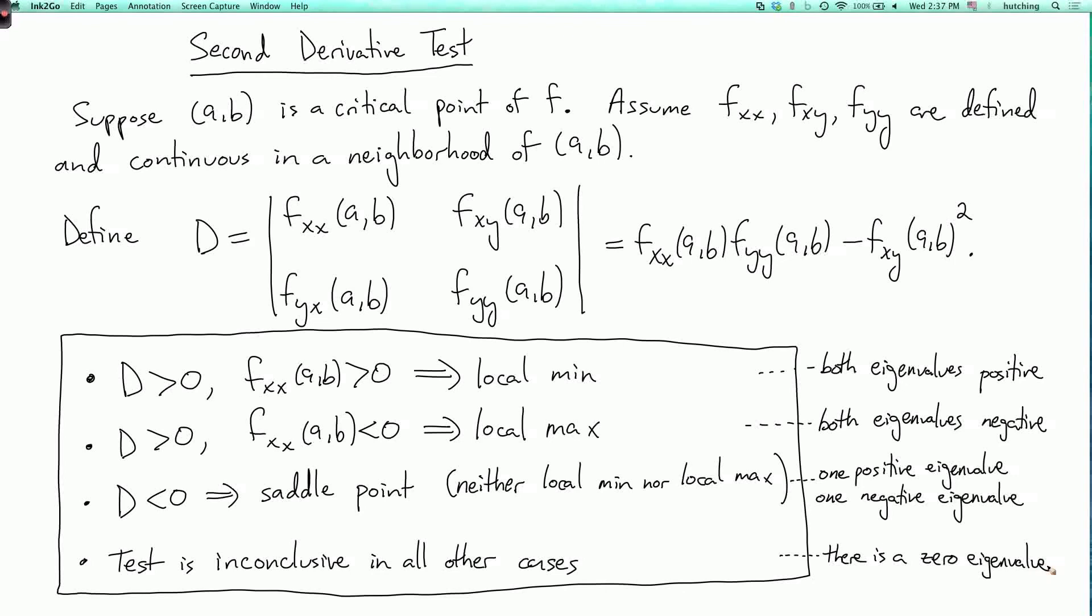Okay, now those of you who have not seen linear algebra before can tune back in. So note also, it might look strange that we've singled out fxx here and not fyy. What's special about x versus y? Notice that when D is greater than zero, if we look at this expression for D, if this is positive, then fxx and fyy must have the same sign and they must be non-zero. Because we're taking their product and then subtracting something greater than or equal to zero. So if D is positive, then either both fxx and fyy are positive or both are negative. So hopefully that makes a little more sense.